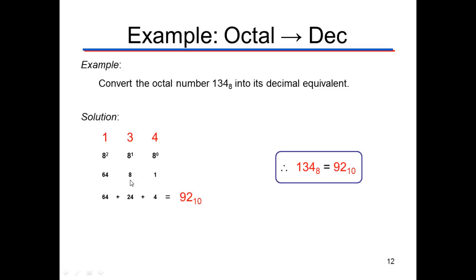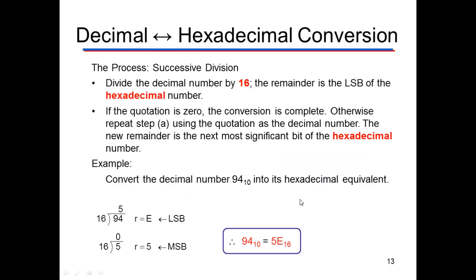3 times 8 is 24, 1 times 64 is 64. We add those all up, it's 92. So that means 134 base 8 is the number 92.